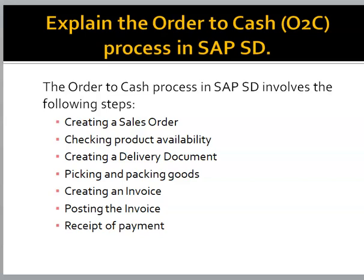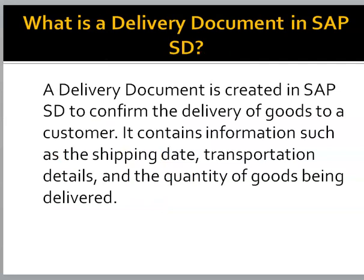Explain the order to cash process in SAP SD. The order to cash process in SAP SD involves the following steps: Creating a Sales Order, Checking Product Availability, Creating a Delivery Document, Picking and Packing Goods, Creating an Invoice, Posting the Invoice, and Receipt of Payment.